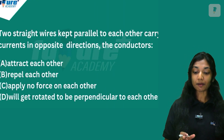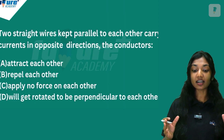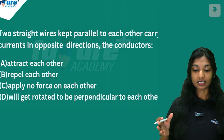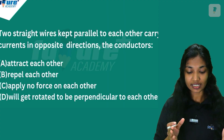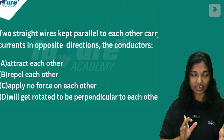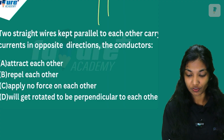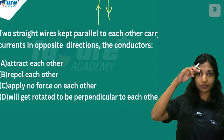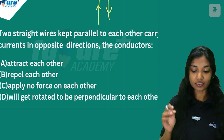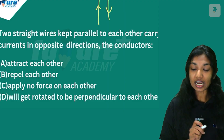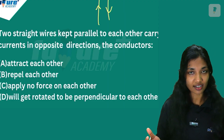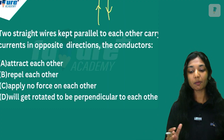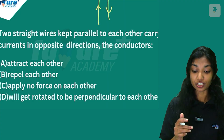Next question: Two straight wires kept parallel to each other carry current in opposite directions. The conductors will — Option A: attract each other, Option B: repel each other, Option C: apply no force on each other, Option D: get rotated to be perpendicular to each other. When currents flow in opposite directions, the wires repel each other. The answer is Option B.